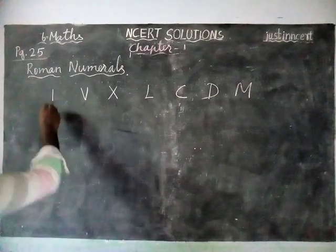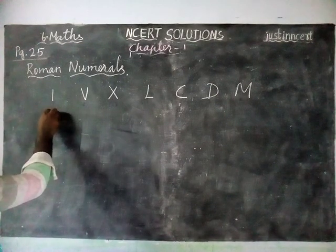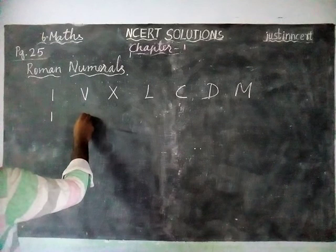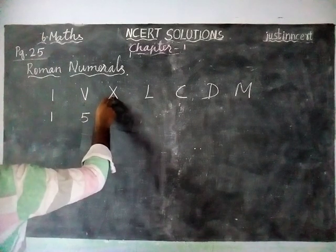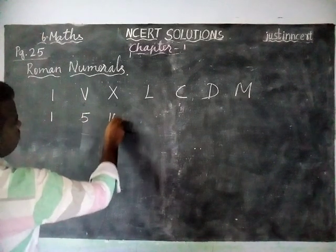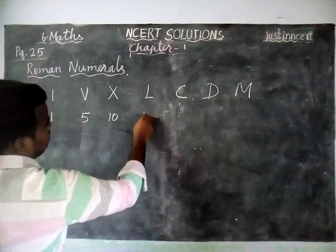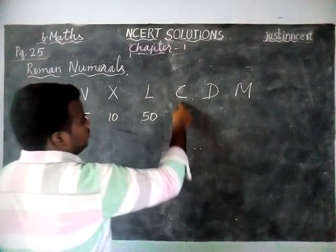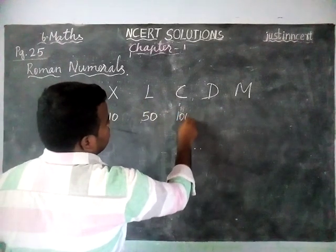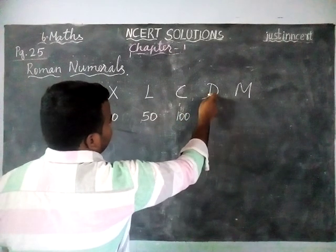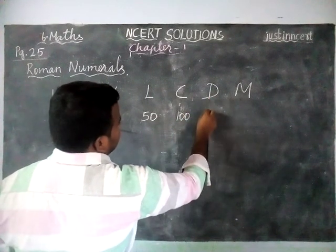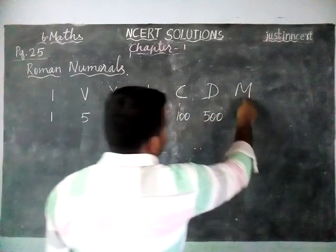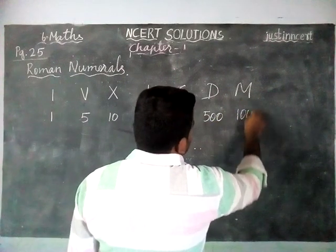The value of I is equal to 1, value of V is equal to 5, value of X is equal to 10, value of L is equal to 50, value of C is equal to 100, value of D is equal to 500, value of M is equal to 1000.